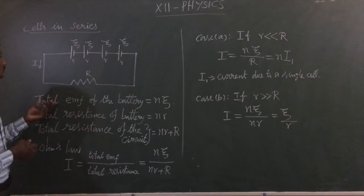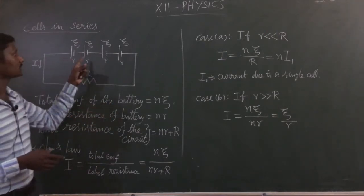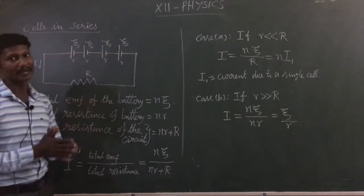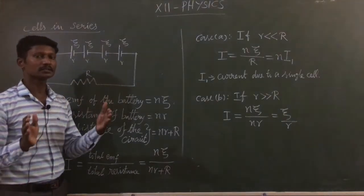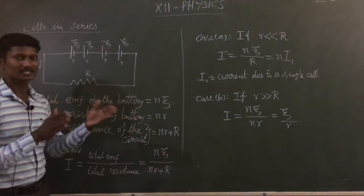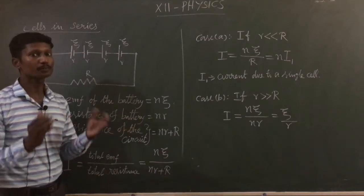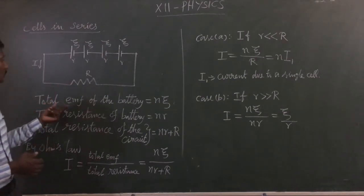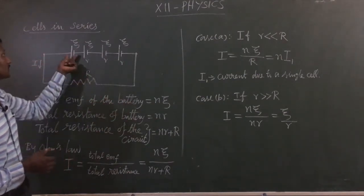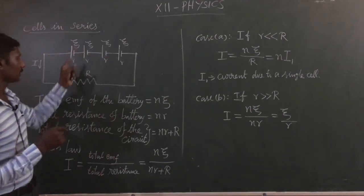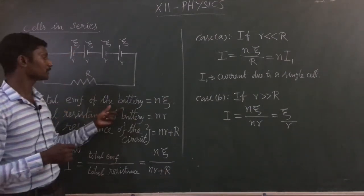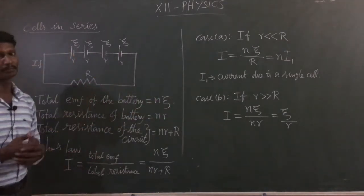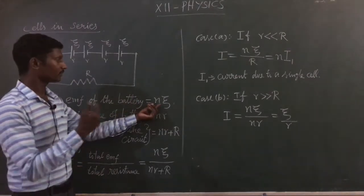From that circuit, the total EMF of the battery — here the cells are connected in series, so it is converted into a battery. A battery means it is a combination of cells, either a series combination, parallel combination, or group of cells. Here we have a group of cells, therefore that is the battery. The total EMF of the battery is N into ψ, because it is a series combination with N number of cells.